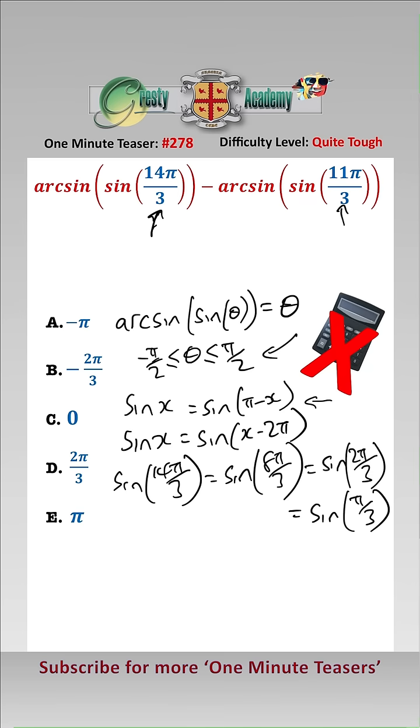So we now have the first one sorted. The second one is slightly easier. We have that sine of 11 pi over 3 by the second formula is equal to the sine of 5 pi over 3 which equals sine of minus pi over 3.